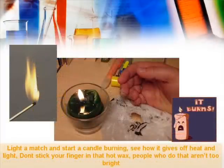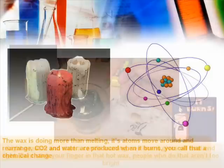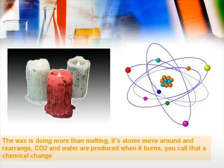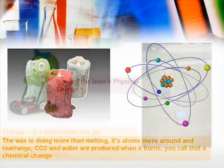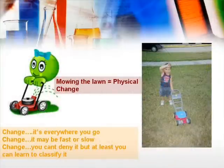Light a match and start a candle burning — see how it gives off heat and light. Don't stick your finger in that hot wax; people who do that aren't too bright. The wax is doing more than melting: its atoms move around and rearrange. CO2 and water are produced when it burns — you call that a chemical change.